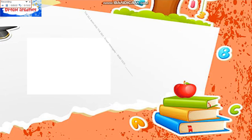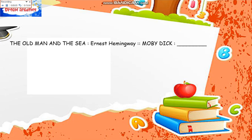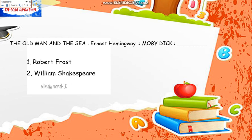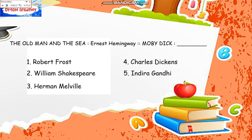A proper noun in your answer should match the proper noun in the given pair. For example: The Old Man and the Sea is to Ernest Hemingway as Moby Dick is to blank. The choices are Robert Frost, William Shakespeare, Herman Melville, Charles Dickens, and Indira Gandhi. The Old Man and the Sea was written by Ernest Hemingway, and Moby Dick was written by Herman Melville. So the answer is number three.